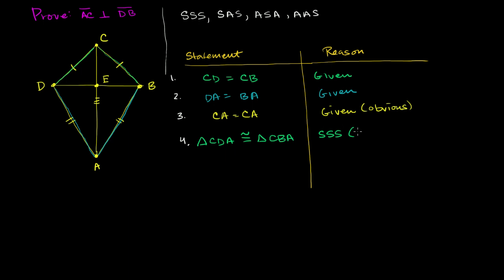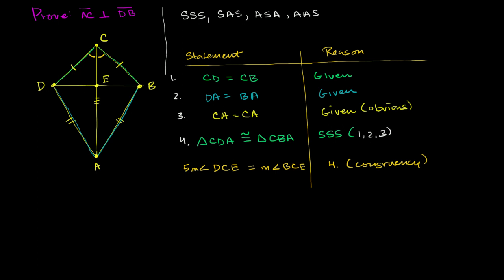By the side-side-side postulate and statements 1, 2, and 3, we know these two triangles are congruent. If they are congruent, then all of their corresponding angles are equivalent. Statement 5: the measure of angle DCE is equal to the measure of angle BCE. This comes straight out of statement 4 — the congruency of those triangles implies their corresponding angles have the exact same measure.